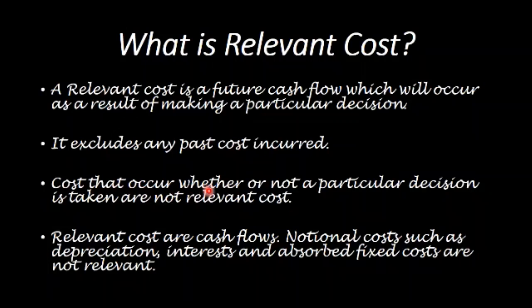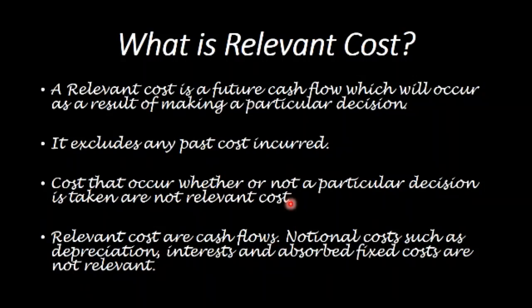Costs that occur whether or not a particular decision is taken are not relevant costs. For example, depreciation of a fixed asset will occur regardless of what decision is taken. If you go through with the decision, you still have depreciation on your equipment. And if you say no, you're still going to have it. So it does not affect the decision either way, and you will ignore it — that is not a relevant cost.